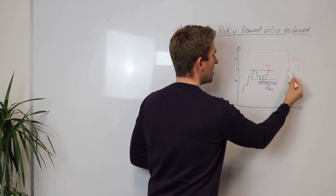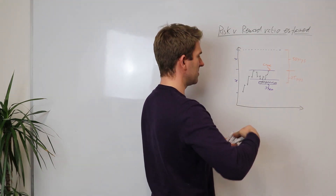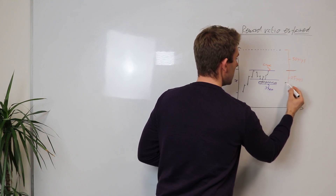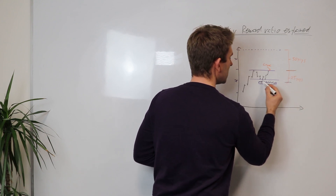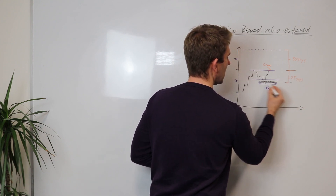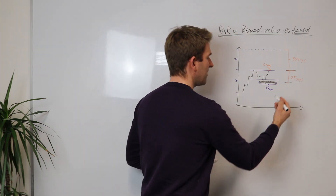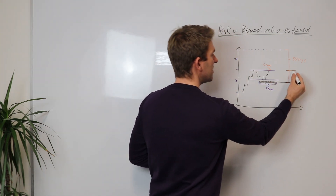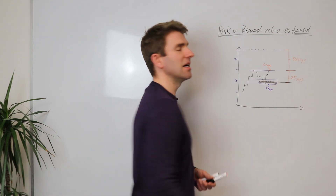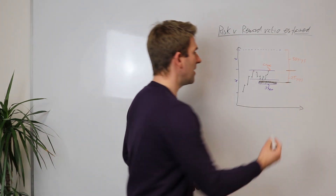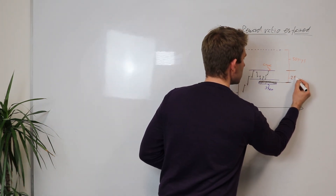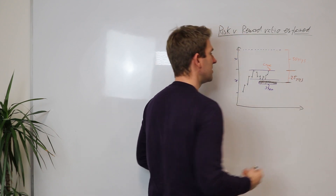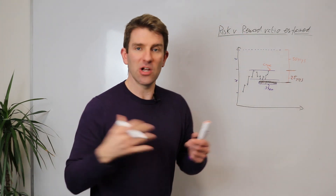Using the black pen so you'll see a bit better — the distance from our entry here to our stop position here, let's imagine our stop was at this definite level. The distance from here to here is 25 pips. That's our risk on the trade — we can quantify that.